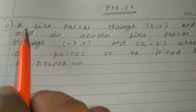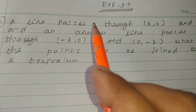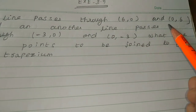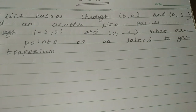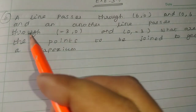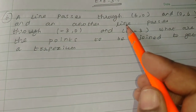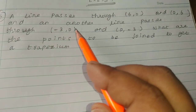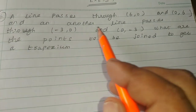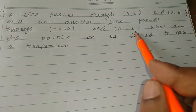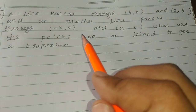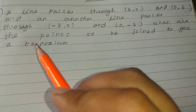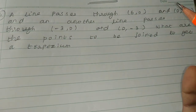Sixth sum: A line passes through (6,0) and (0,6), and another line passes through (-3,0) and (0,-3). What are the points to be joined to get a trapezium?